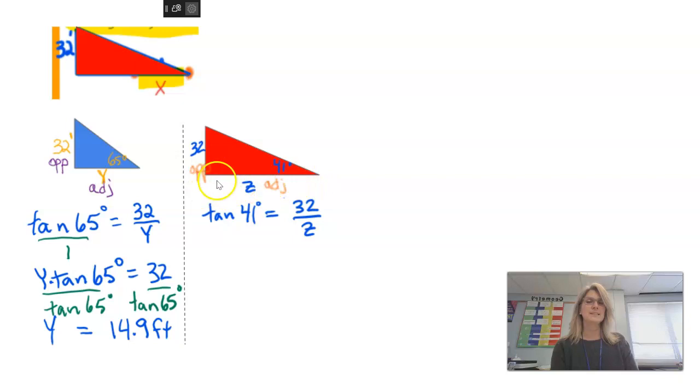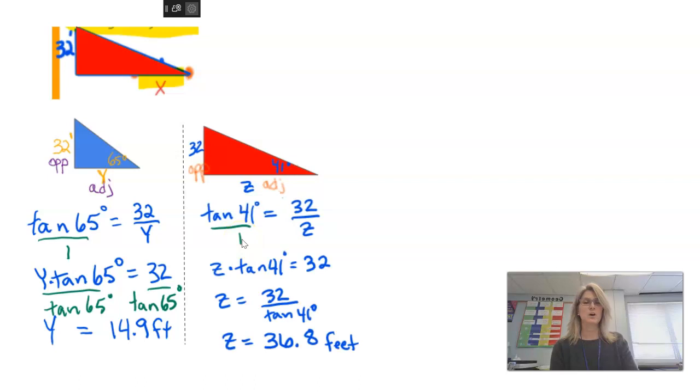So I'm going to solve, set up a proportion. I have Z times the tangent of 41 is equal to 32. Divide both sides of the equation by tangent of 41. And get out your calculators. Make sure that I've done my math right, but I have Z is 36.8 feet. We're not done, though.